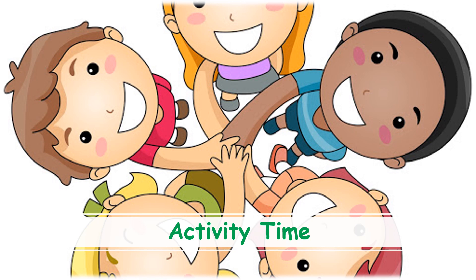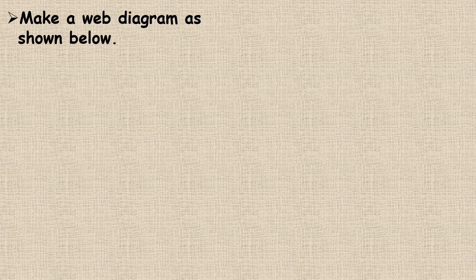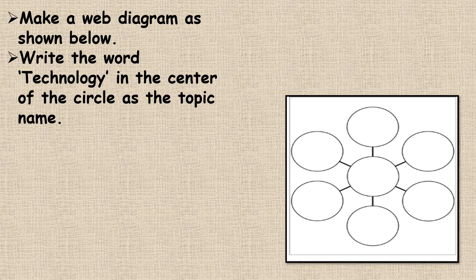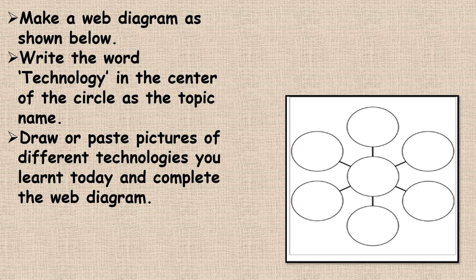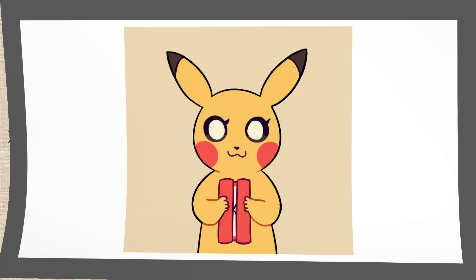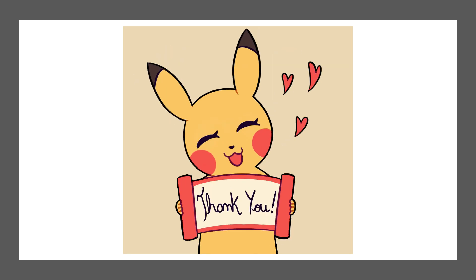Now it's activity time! To do this activity, you need to make a web diagram as shown. Write the word 'technology' in the center circle as the topic name, then draw or paste pictures of different technologies you learned today to complete the web diagram. You can use old magazines or supermarket brochures for pictures. Don't forget to send the picture to your teacher. Thank you and bye-bye children — see you next time!